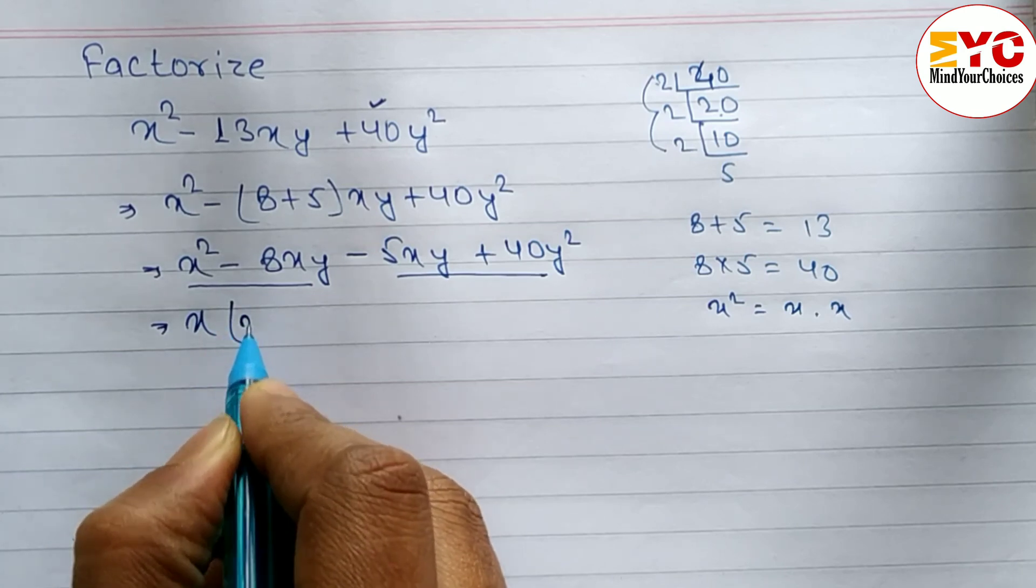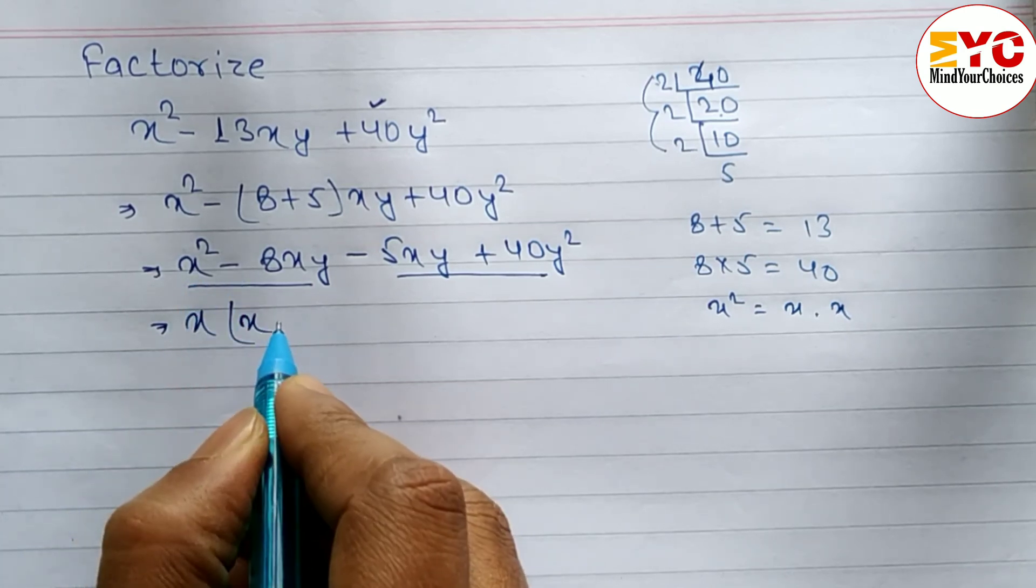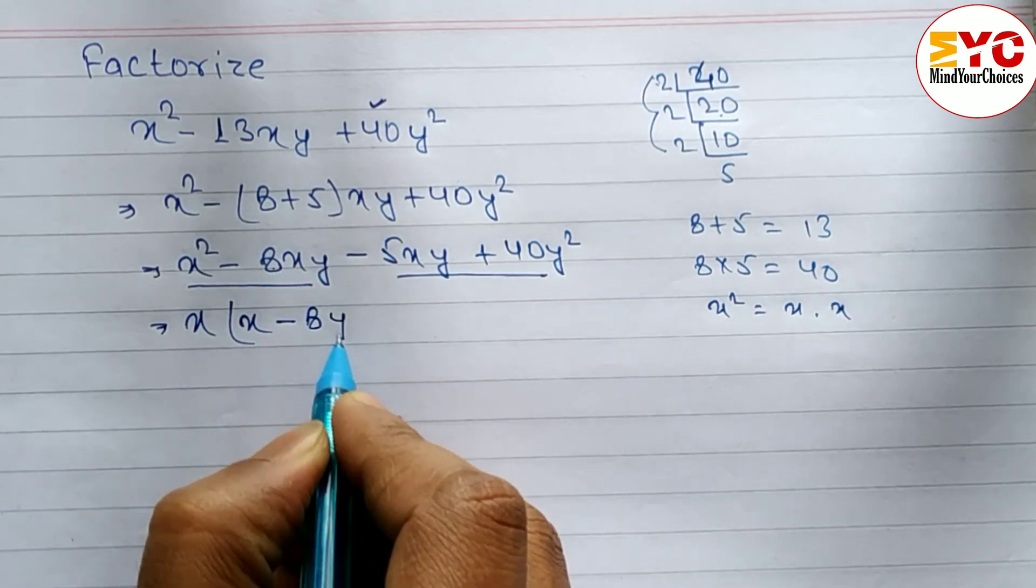x is common here, so what remains is x because one x is already common, so remaining is one x minus 8y. So we write x times (x minus 8y).